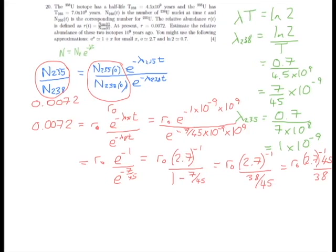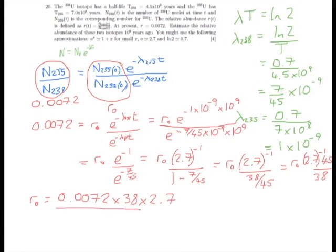Now we need to rearrange the equation to get r₀. So r₀ equals 0.0072 multiplied by 38 multiplied by 2.7, divided by 45. After carrying out the long multiplication and division, our final answer comes out as 0.016.